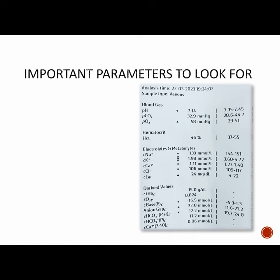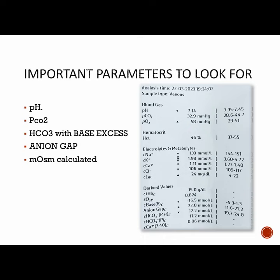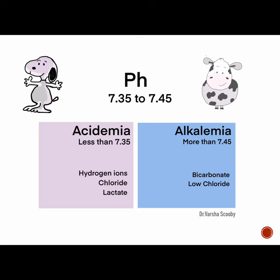To your right side, a real blood gas report is attached. The important parameters to check are pH, pCO2, bicarbonate with base excess, anion gap, calculated osmolarity (optional), electrolytes, and lactate. The normal pH range is between 7.35 and 7.45. pH less than 7.35 indicates acidemia, whereas pH more than 7.45 indicates alkalemia. There is a difference between acidemia and acidosis: acidemia is the state of low pH, while acidosis is the process leading to that state. This applies equally for alkalemia and alkalosis.